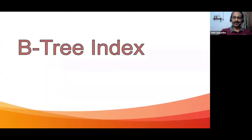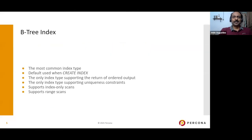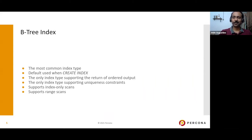We can't start a discussion about indexes without discussing the B-tree index — that's the base of all indexes. The B-tree index is the most common type. When we create an index without specifying a type, it will be the B-tree index by default. This is the only index type supporting the return of ordered output, so if your query has an ORDER BY clause, B-tree is the index to select. It is also the only index type supporting unique constraints, such as primary keys.